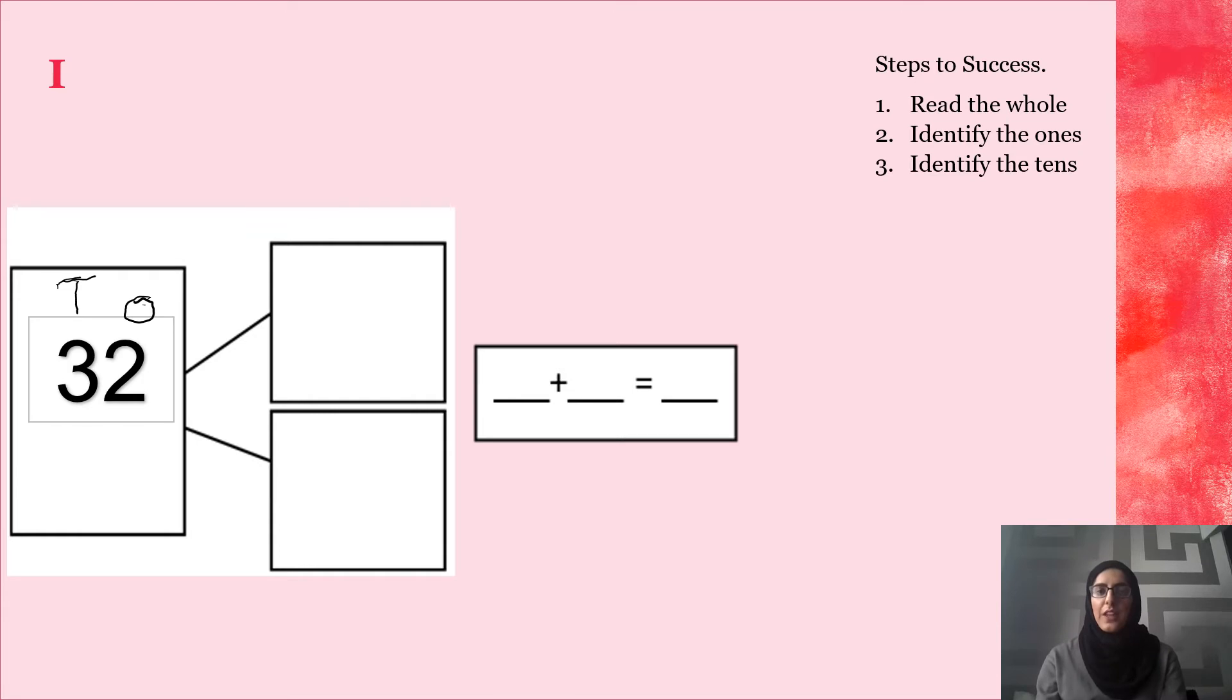Identify the ones. I know I have 2 ones. I'm just going to write over here. And I've got 3 tens which make 30.